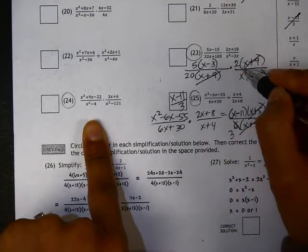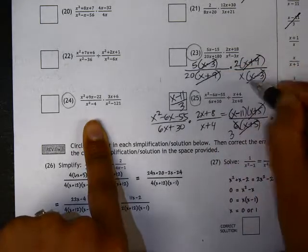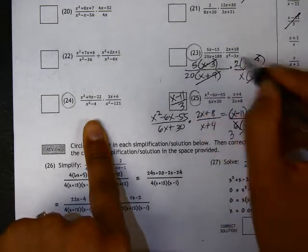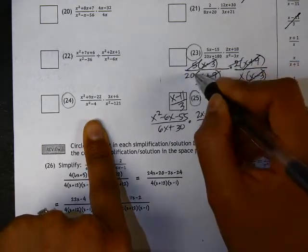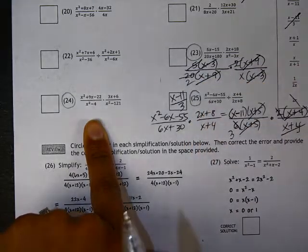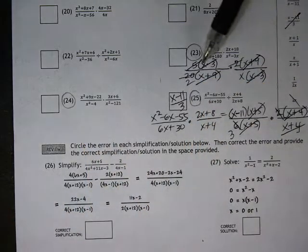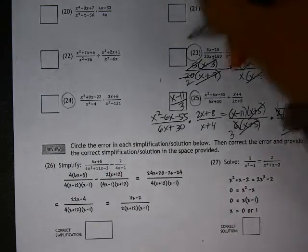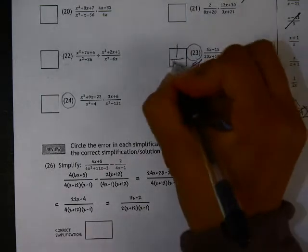So cancelling, we can cancel the x plus 9's, the x minus 3's. 5 times 2 is 10 which can cancel with the 20 to become a 2. So in the numerator we're actually left with a 1, not a 0, and in the denominator we're left with 2x.